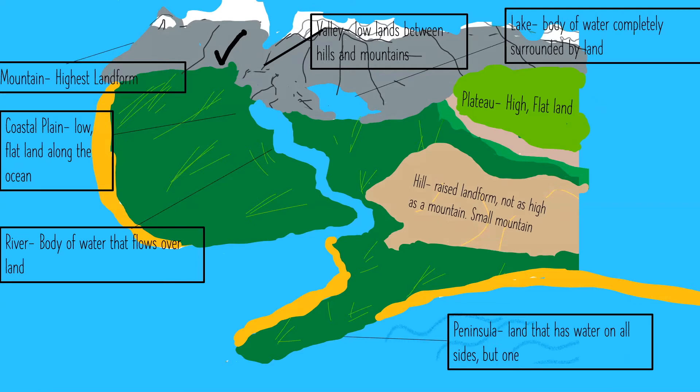So if you go to a beach and there's some grass behind it, that would be a coastal plain. We're color-coding today so let me get my green pen.